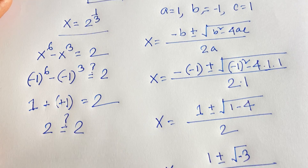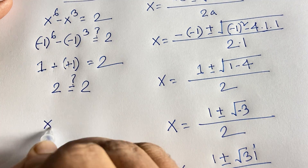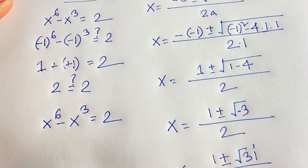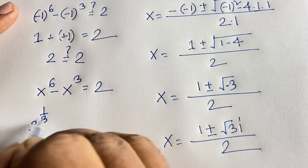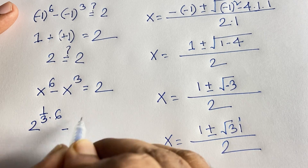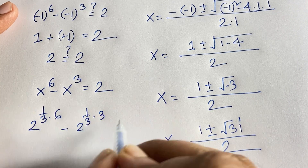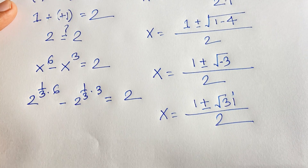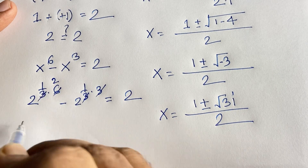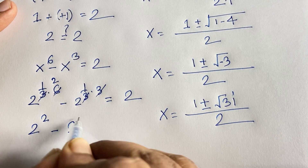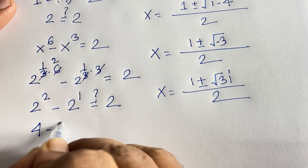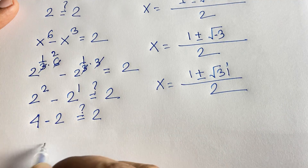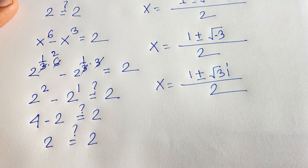Now testing x equals 2 to the power 1 over 3: substituting into x to the power 6 minus x to the power 3 equals 2 gives (2 to the power 1/3) to the power 6 minus (2 to the power 1/3) to the power 3. The 3s cancel: 6 divided by 3 is 2, so we get 2 to the power 2 minus 2 to the power 1, which is 4 minus 2 equals 2. Confirmed. So our final answers are x equals minus 1 or x equals 2 to the power 1 over 3.